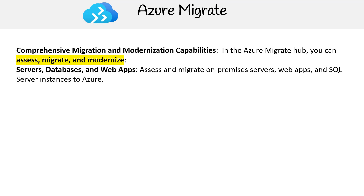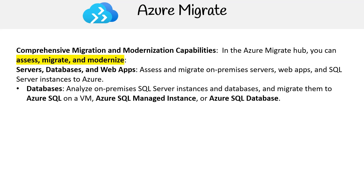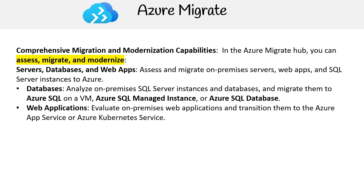Servers, databases, and web apps: assess and migrate on-premises servers, web apps, and SQL Server instances to Azure. Databases: analyze on-premises SQL Server instances and databases and migrate them to Azure SQL on a VM, Azure SQL Managed Instance, or Azure SQL Database. Web applications: evaluate on-premises web applications and transition them to Azure App Service or Azure Kubernetes Service.